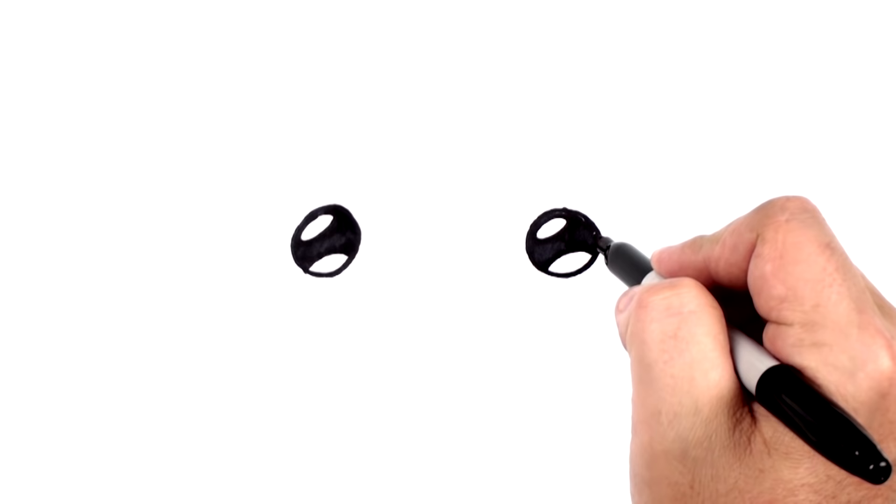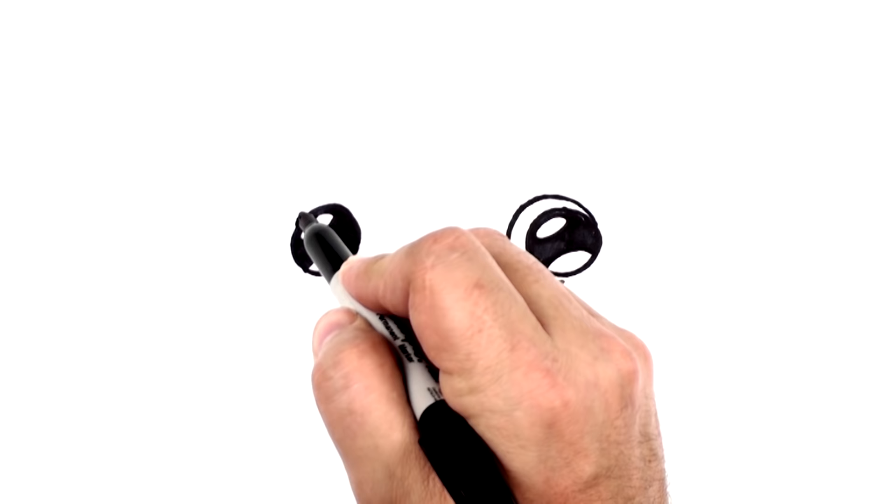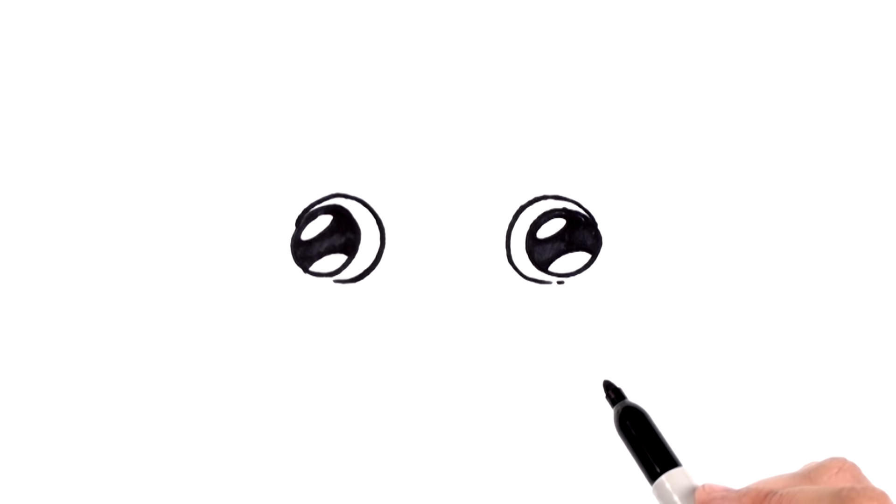Now, this dog is going to have its eyes sort of looking out to the side. So we're going to come here, and we're going to draw a curve like that. And this side, we're going to do sort of the mirror image, which is going to make his eyes kind of not cross-eyed, but I don't know if you call that wall-eyed. They're kind of looking out to each side.